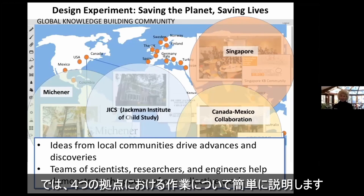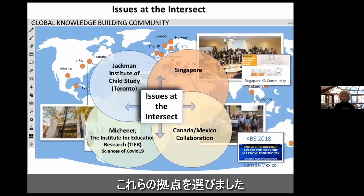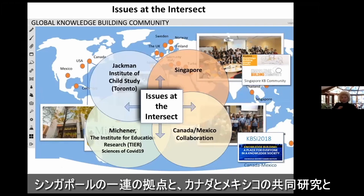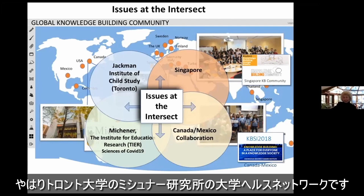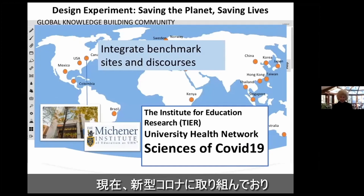I'm going to take you into some work of four sites, selected because they are distributed in the world. One is in Toronto — the Jackman Institute of Child Study at the University of Toronto. Others include a collection of sites in Singapore, a Canada-Mexico collaboration, and the Michener Institute, also at the University of Toronto, which is a University Health Network currently dealing with the sciences of COVID.